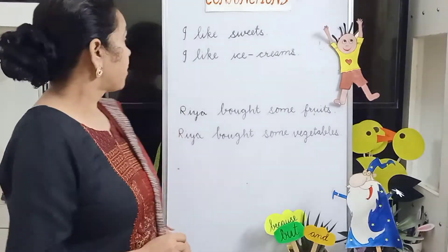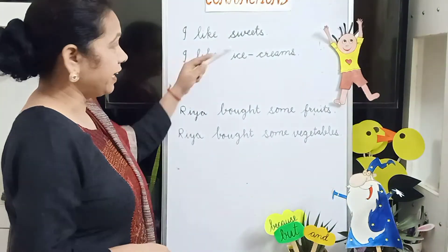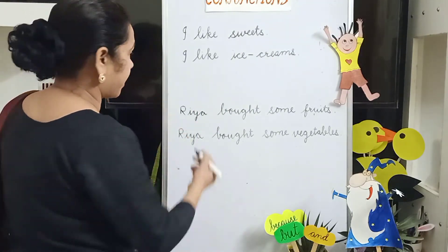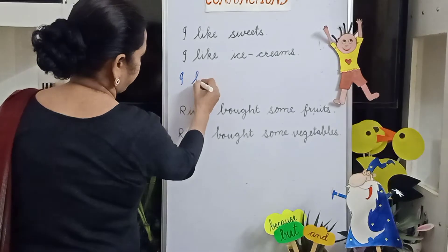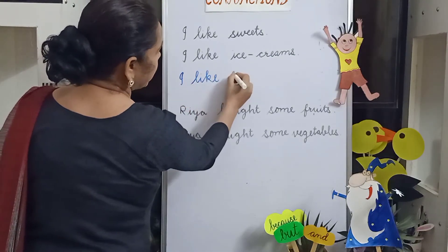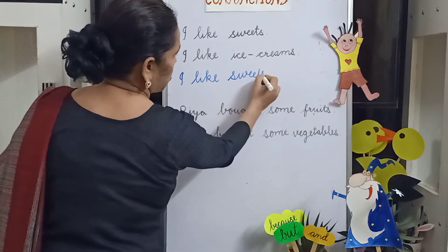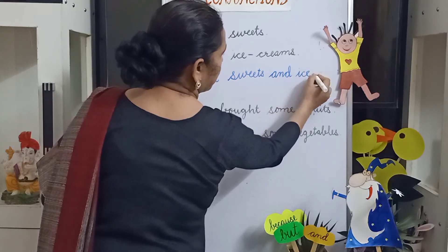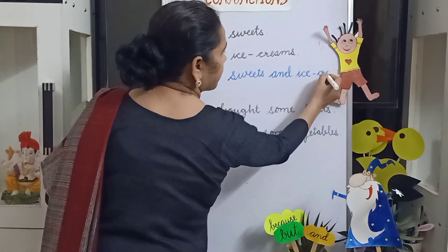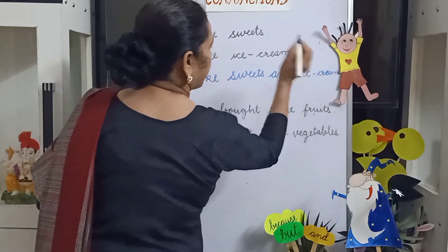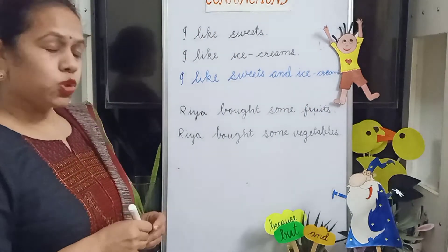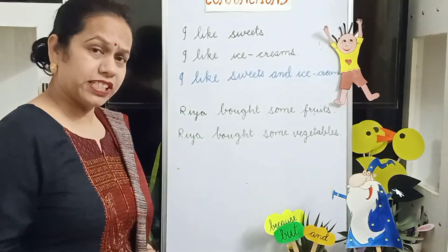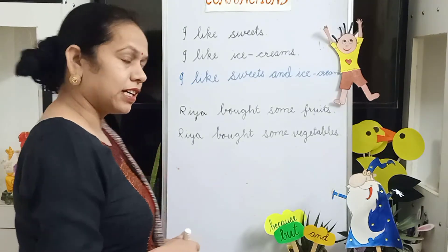Let's do some more sentences. 'I like sweets' and 'I like ice creams.' So we will use conjunction 'and' again: I like sweets and ice creams. Next: 'Ria bought some fruits' and 'Ria bought some vegetables.' Again, here we will use conjunction 'and.'